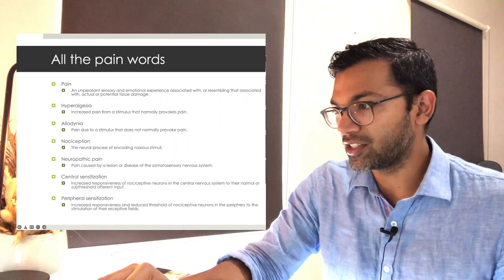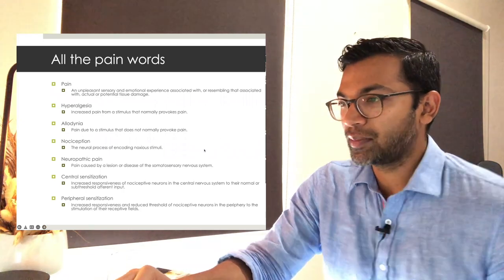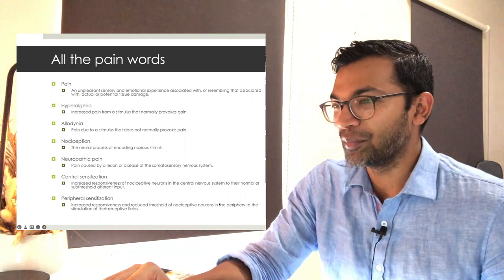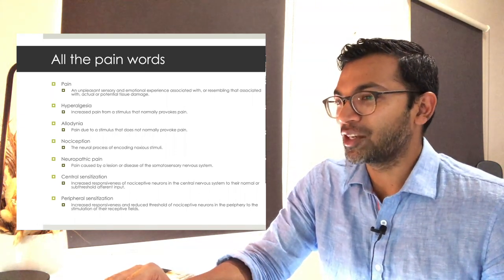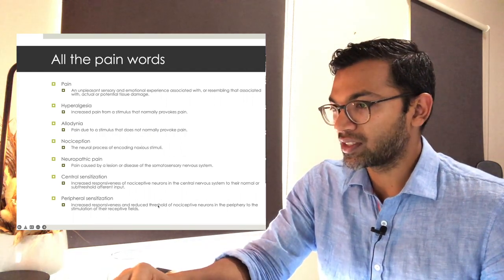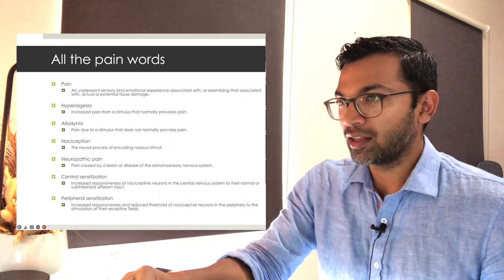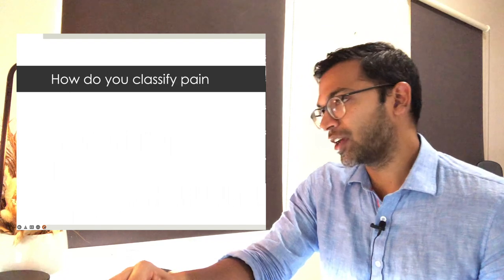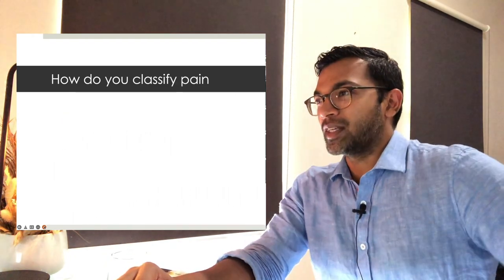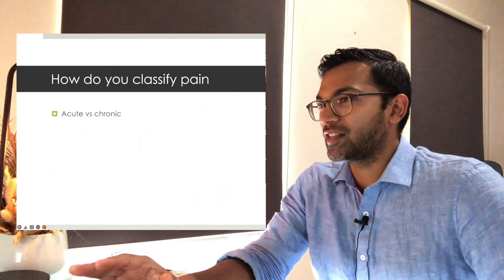Central sensitization is increased responsiveness of nociceptive neurons in the central nervous system to normal or sub-threshold input. Peripheral sensitization is increased responsiveness of nociceptive neurons in the periphery. These are common definitions you'll be asked about if you're doing pain rounds or trying to impress your pain bosses because you want to get into anesthetics.